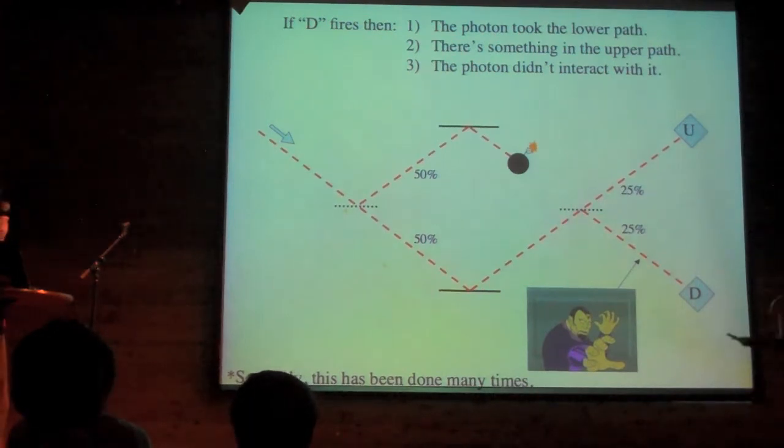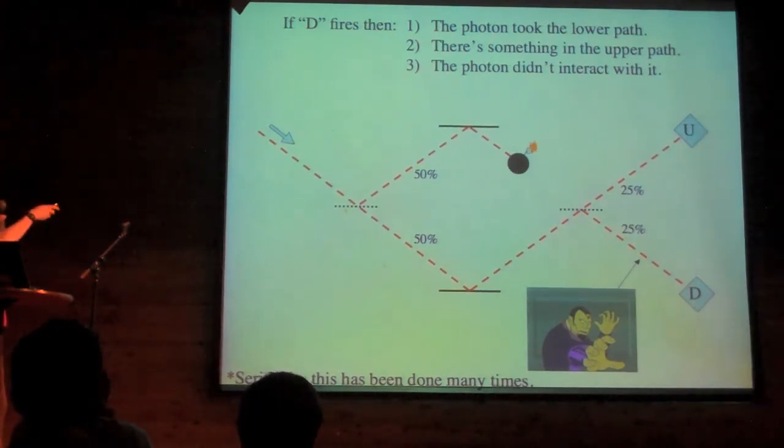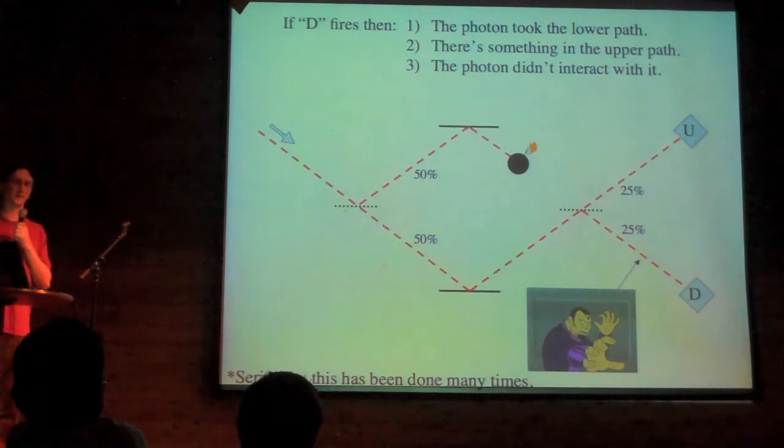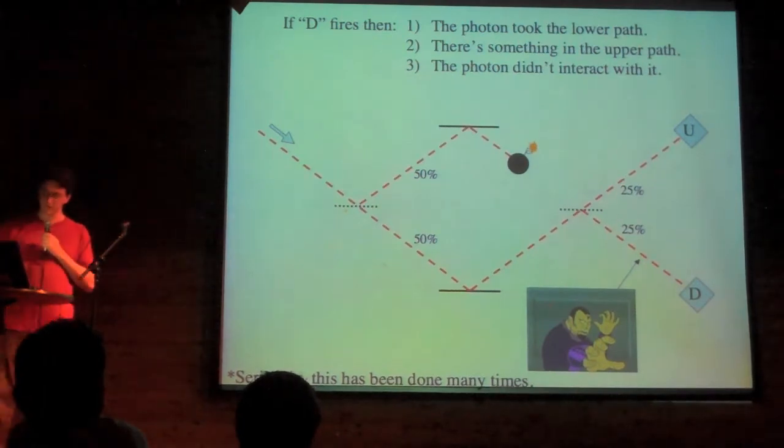So, one way to look at it, to really bend your brain, there's another world where the photon hits, and we gain that information in our world because the photon is detected down here. Isn't that weird? But it works.